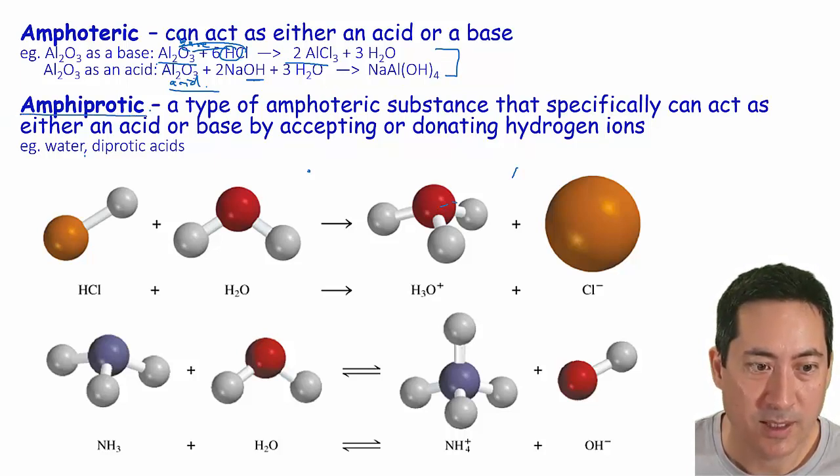Now amphiprotic is slightly different. It's a type of amphoteric substance, but this specifically involves giving off and accepting protons. Water is a good example of something that can act as both an acid and a base.